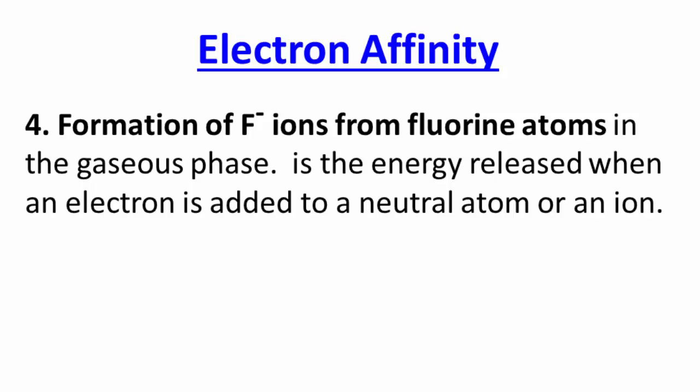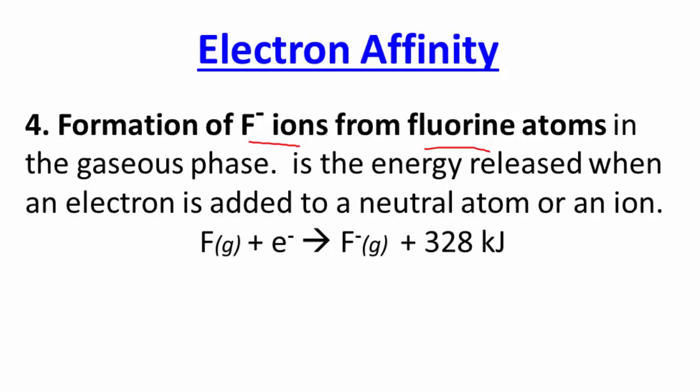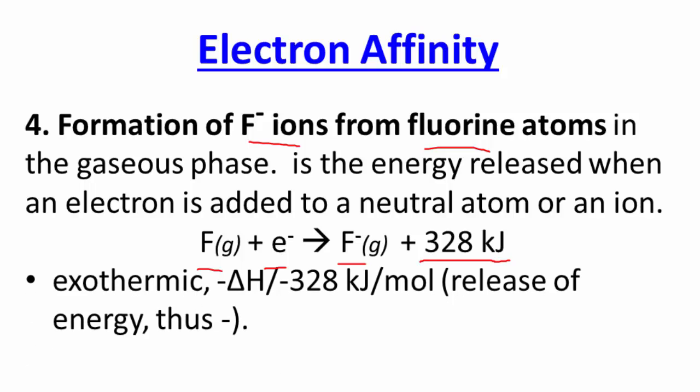Number four is electron affinity. When forming an ionic compound, it's formed from ions. Fluorine is not yet an ion, so we add an electron to the fluorine — forming fluoride ions from fluorine atoms in the gaseous state. Fluorine plus an electron gives fluoride ions, and this time energy is written on the right-hand side, meaning energy is released — an exothermic process. The delta H for this is negative 328 kilojoules per mole.